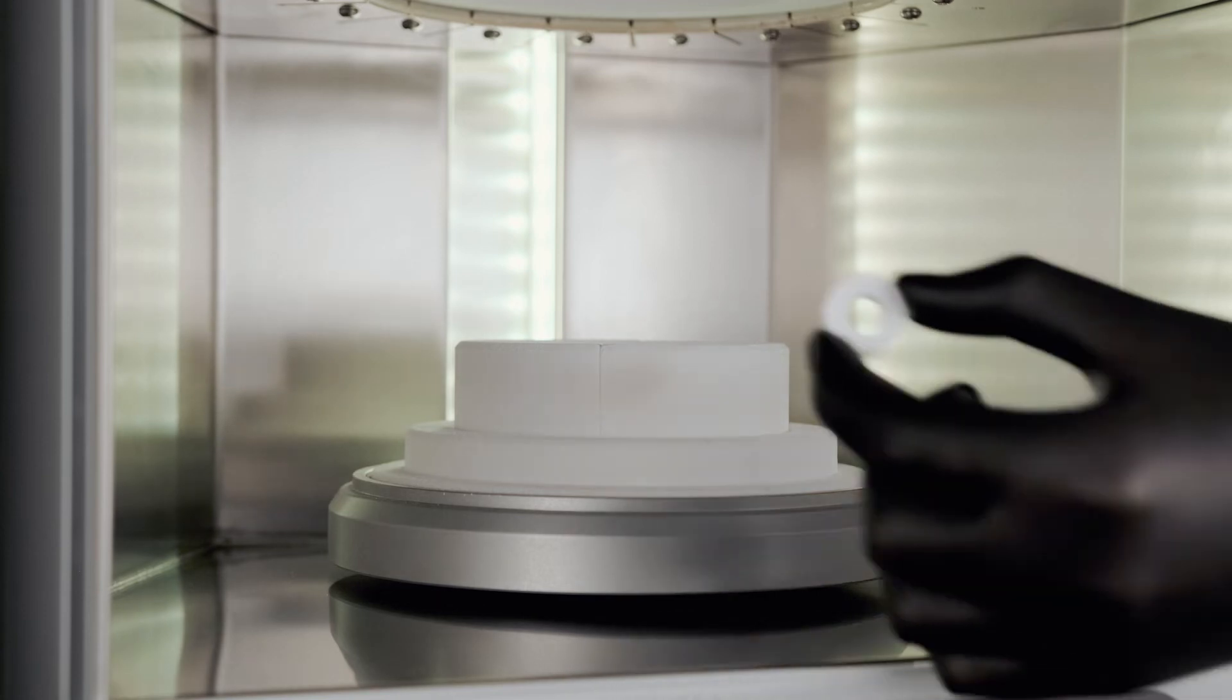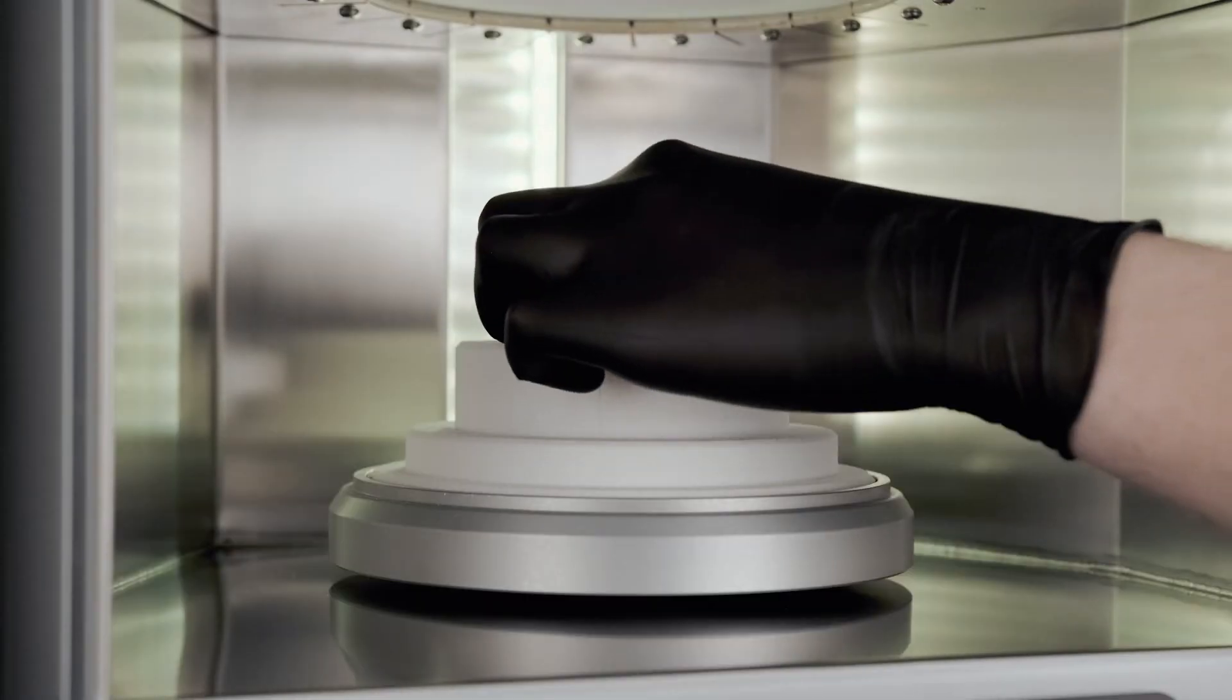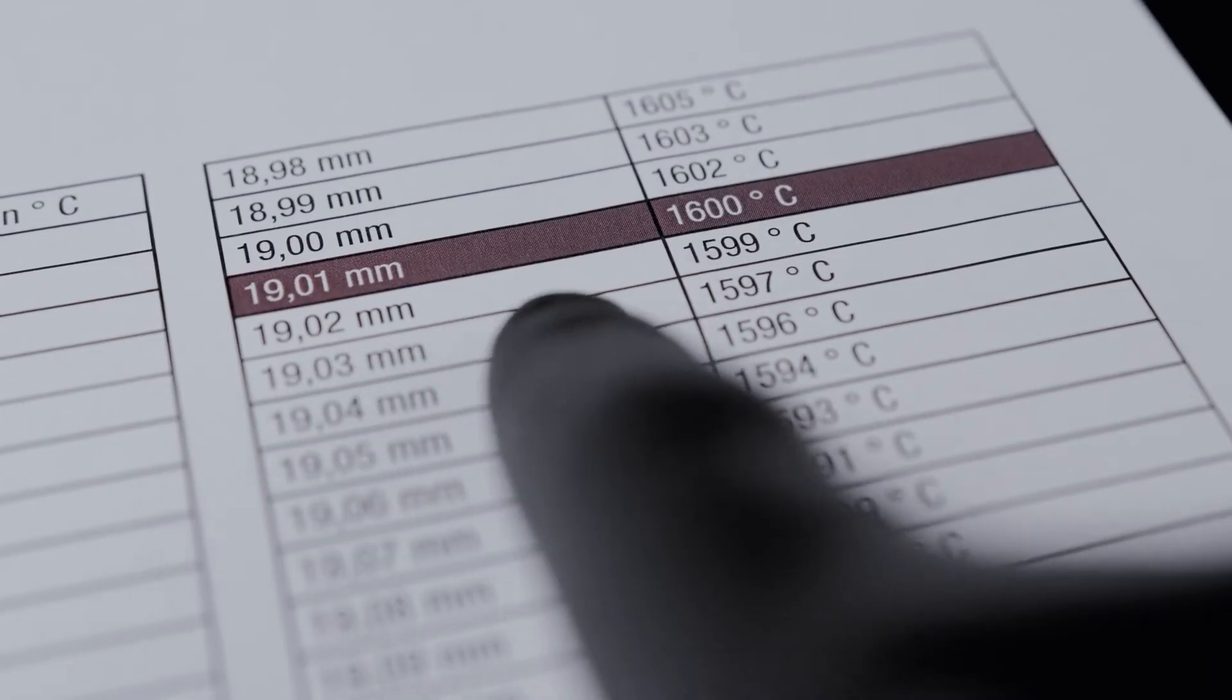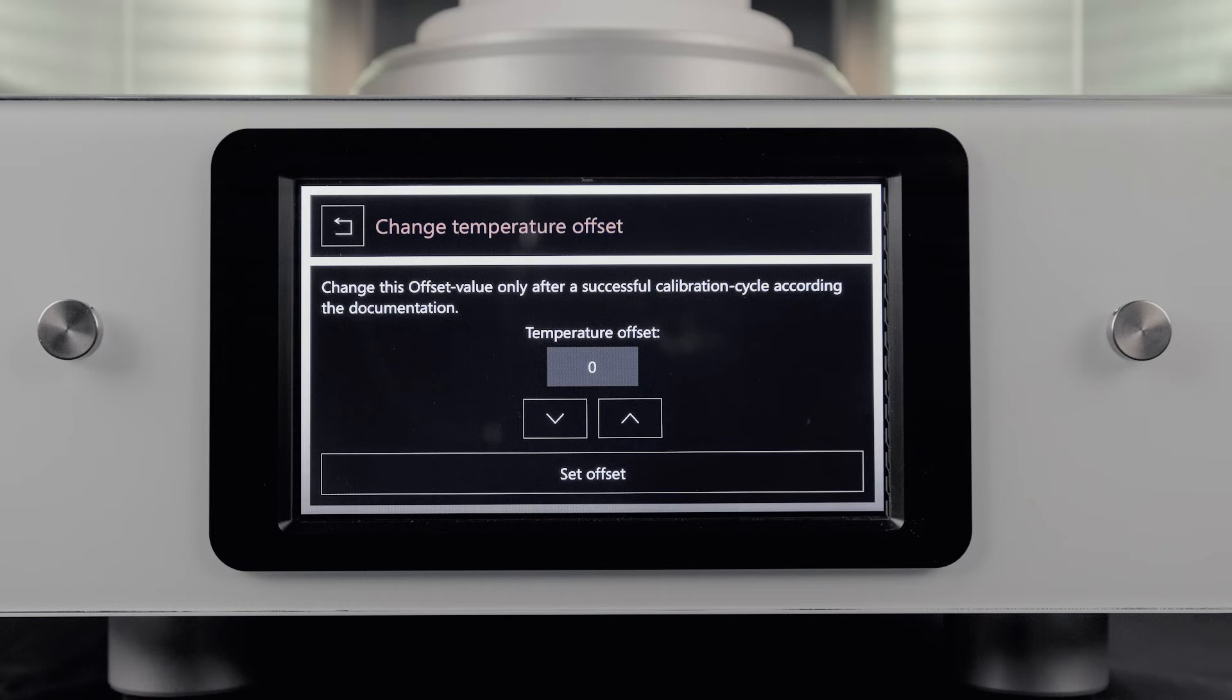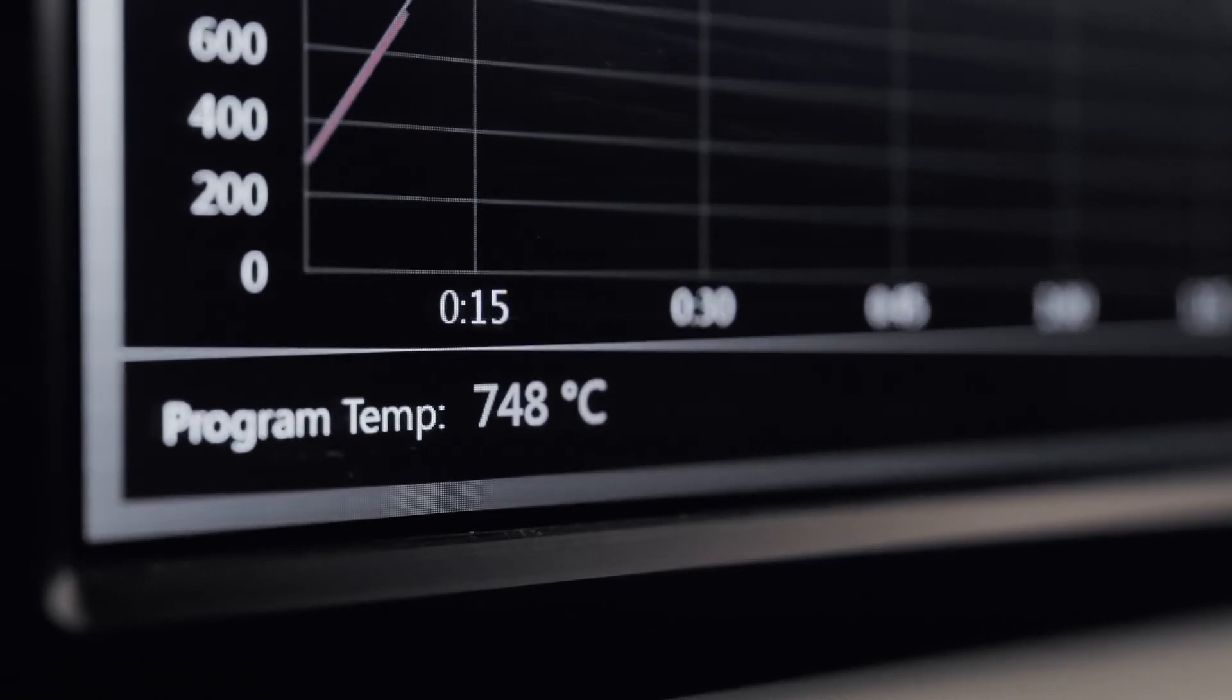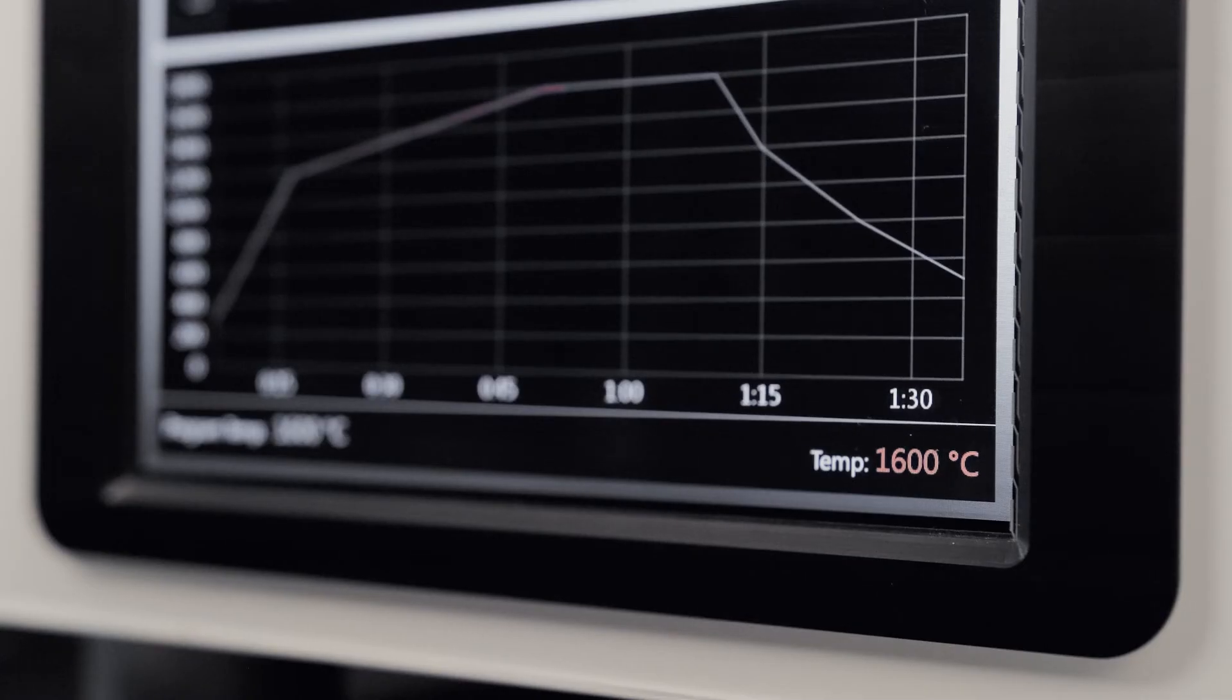In this case, all you have to do is sinter a calibration ring with a specific program and then compare its diameter with a reference table. The difference can be corrected directly in the software so that the furnace is always optimally calibrated and reliably achieves a control accuracy of plus or minus 2 degrees Celsius at a final temperature of 1,600 degrees Celsius.